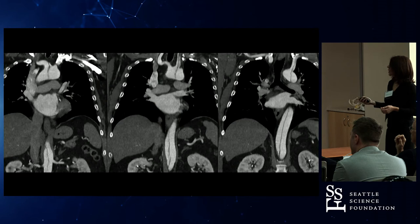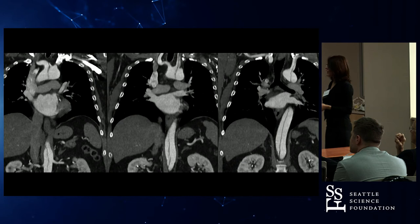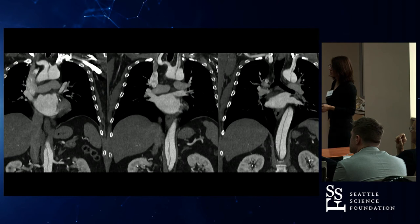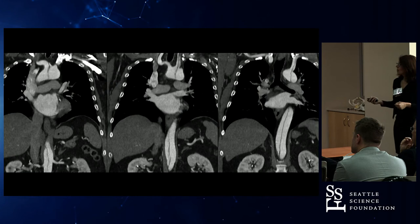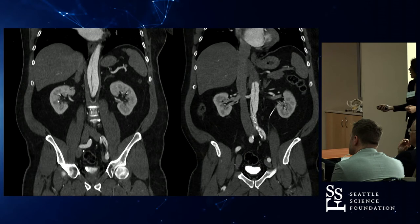Back to that dissection case. Here we have the great vessels and the aortic arch. You can see the dissection going into the innominate, here it is going into the left common carotid, here it is going into the left subclavian. And it's going down too — down the aorta, the abdominal aorta, into the left common iliac.